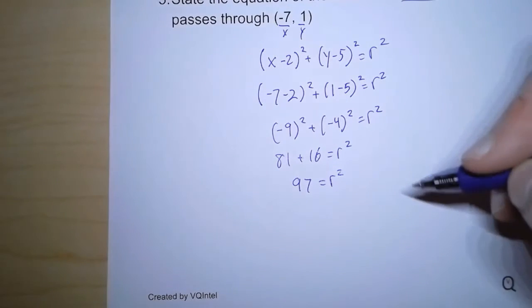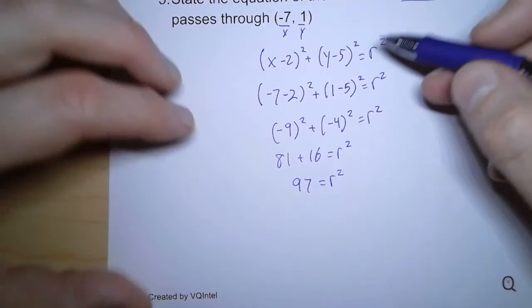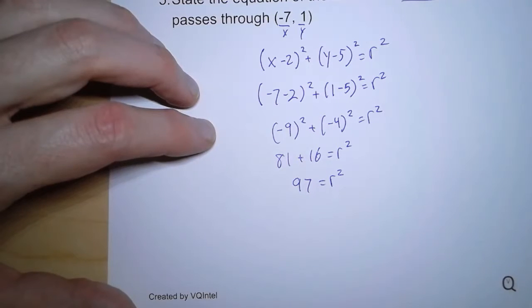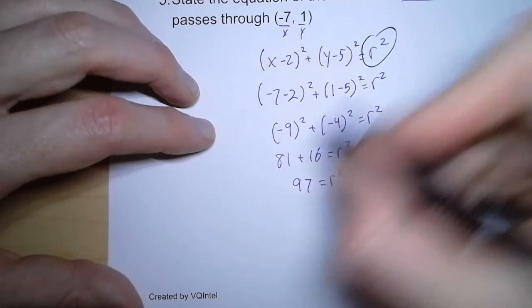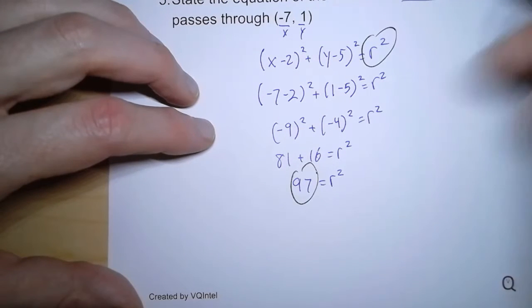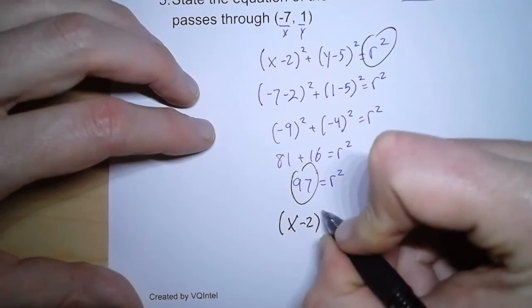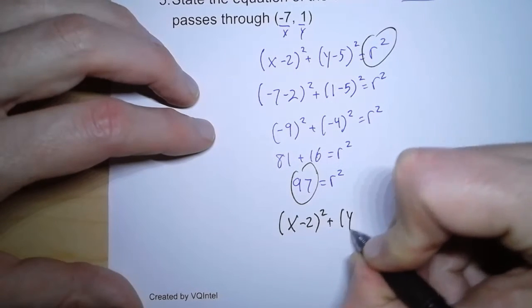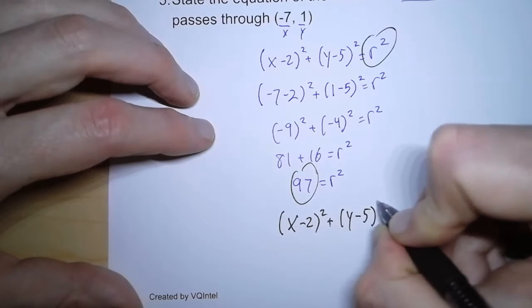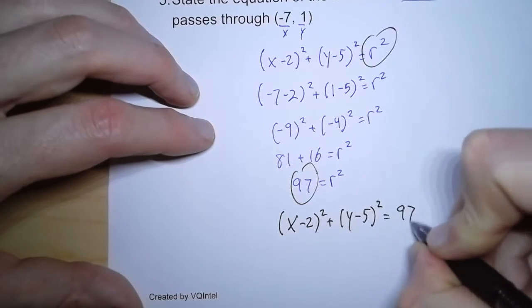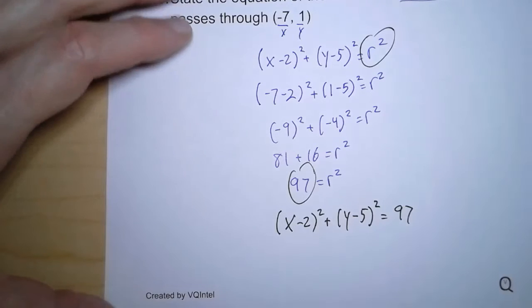Now, the radius is square root of 97, but we actually don't need that. All we need is the equation. So like number 4, we just have to replace r squared with 97. So our equation is going to be x minus 2 squared, plus quantity y minus 5 squared, equals 97. And there's our equation.